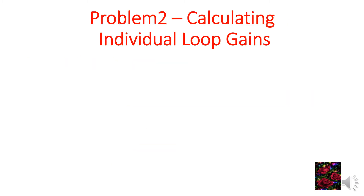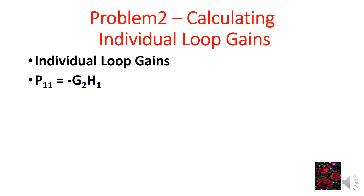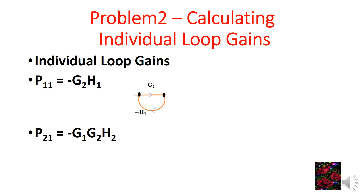Calculating individual loop gains for Problem 2: the first individual loop gain P11 equals minus G2·H1, as represented in the diagram. The second individual loop gain P21 equals minus G1·G2·H2, also represented in this diagram.